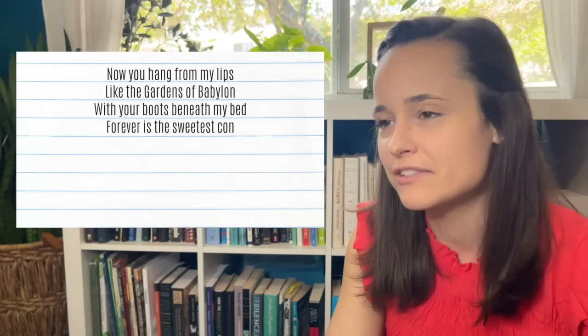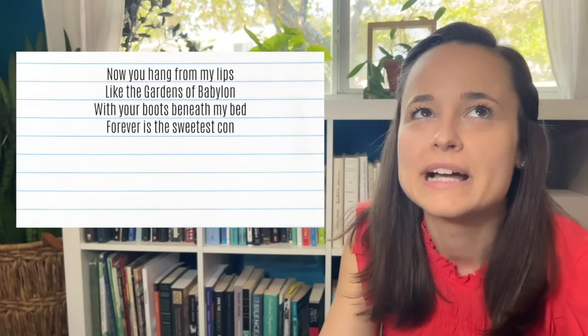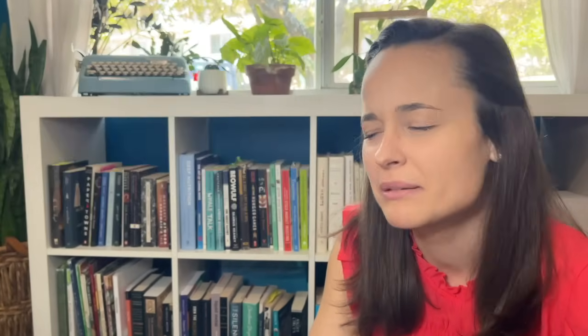Forever is the sweetest con. I like that because it makes me think like we kind of conned ourselves because we never thought that we would settle down and now we did. But I'm sort of like, did they? The thing that makes me think they did was she says, I've had some tricks up my sleeve. Whereas before she said, I've got some tricks up my sleeve. So I feel like because it's past tense now, she's put her tricks aside, but I'm not sure.